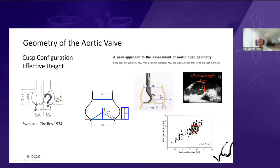Effective height is something a surgeon can measure in the operating room with a caliper, and it can also be determined by echocardiography. Once we had the parameter, we decided to calibrate it. We studied 130-some volunteers across different age groups — mostly adults — and realized that in a normally functioning aortic valve, effective height was 9 to 10 millimeters. Later studies confirmed that, and in relation to cusp size or geometric height, it should be roughly 45% of geometric height.